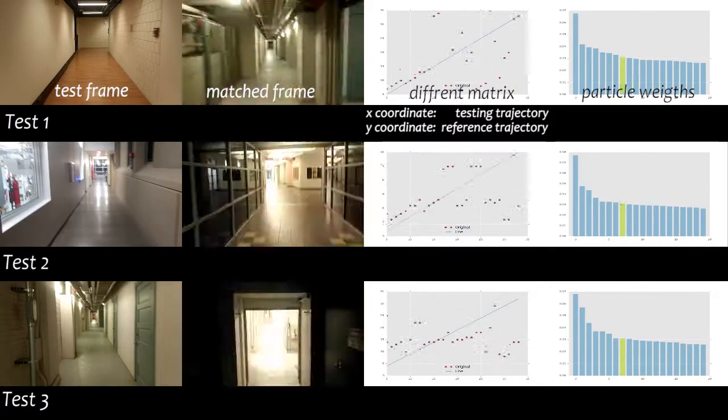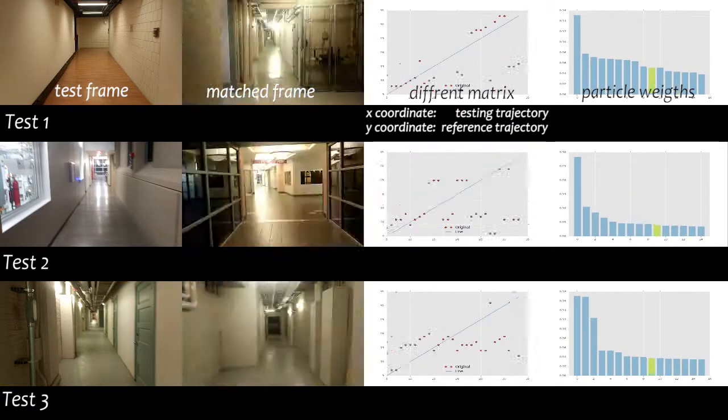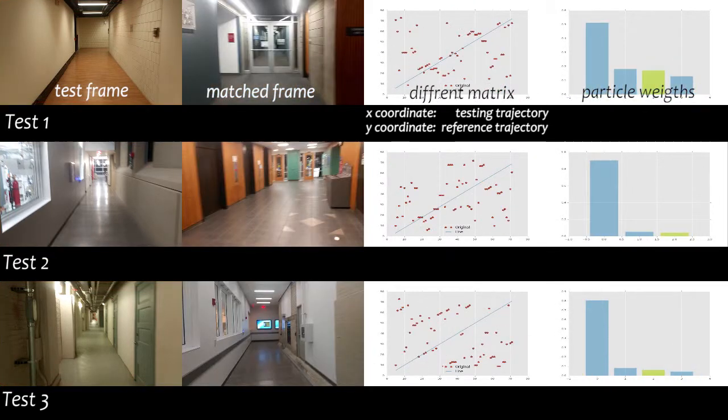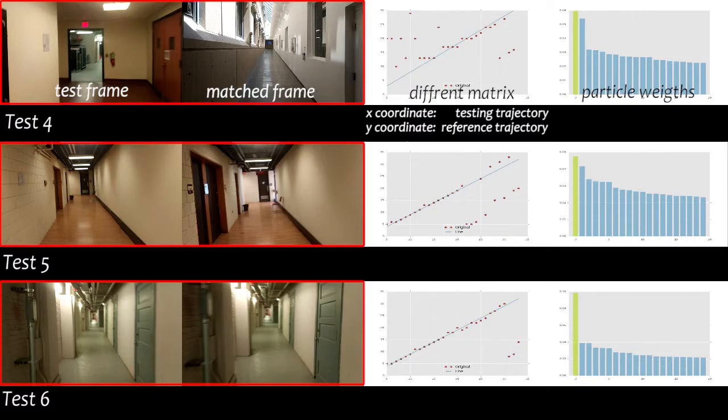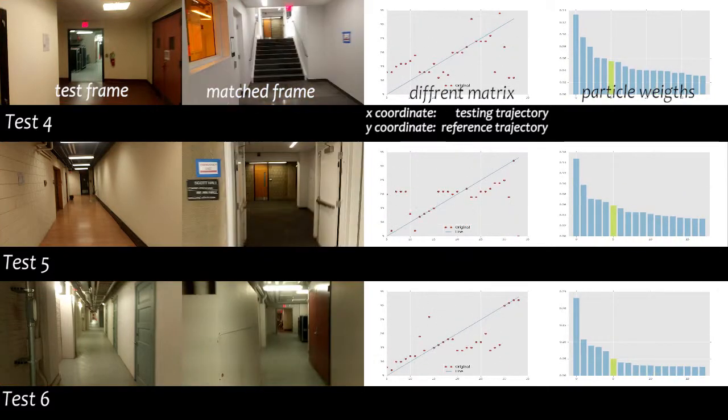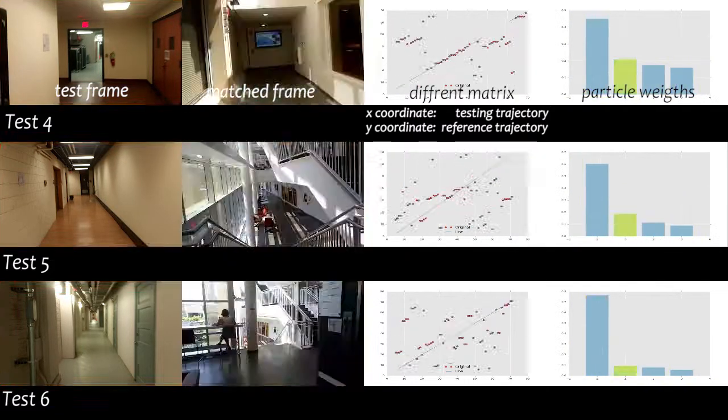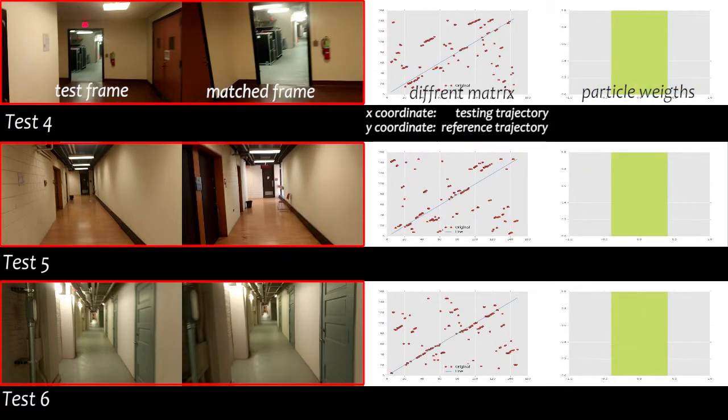The global localization results on the two datasets. Starting from lower resolution level, similar places are quickly matched. Larger particle weights lead to higher trajectory similarities. Then in the higher resolution level, the best match is refined.